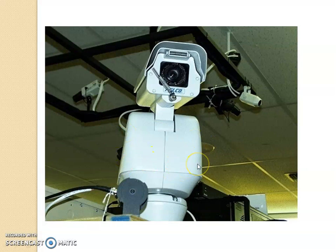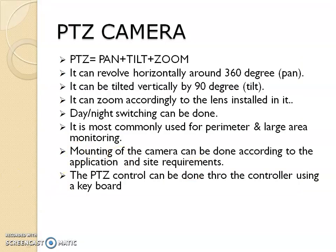Literally this camera covers each and every part of the space around it, so there won't be any blind spots. It can revolve horizontally 360 degrees — that is called Pan. It can be tilted vertically by 90 degrees — that is called Tilt. And the third one, Zoom, depends on the installed lens which can zoom in or zoom out. Day and night switching can also be done. It is most commonly used in perimeter and large area monitoring. Mounting can be done according to sight requirements, and PTZ can be controlled remotely from a computer.